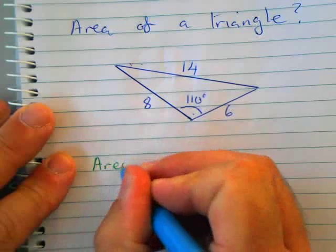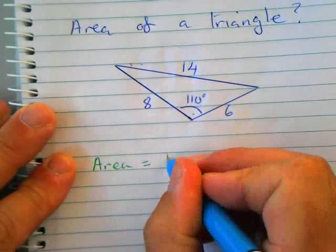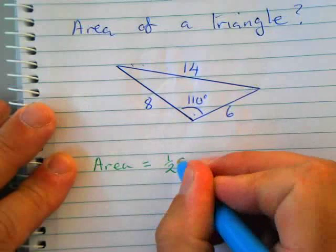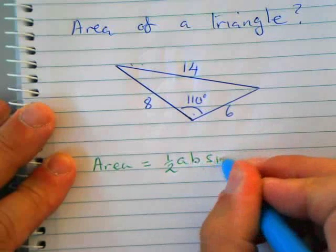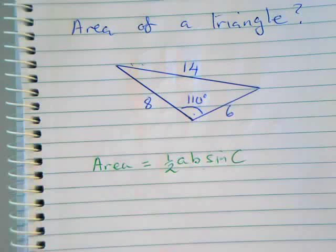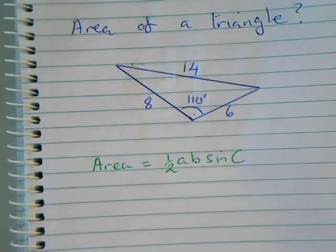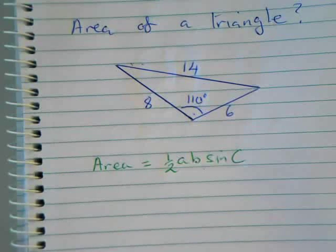The area of a triangle is one half times by a times by b times by the sine of C. So we call that half a b sine C. And that is the formula for the area of any triangle not just one where you know the height.